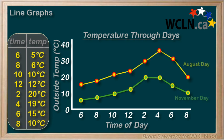Then we label the two graphs so we know which is which. And there we go — we have a double line graph: two line graphs on the same axis.